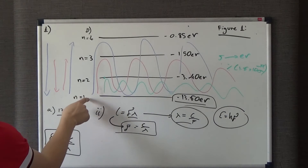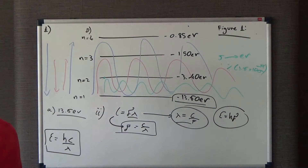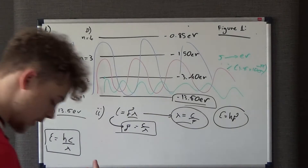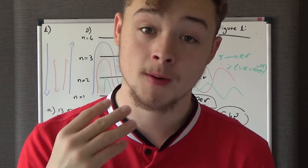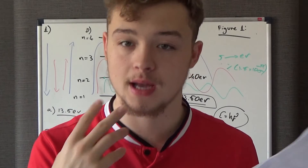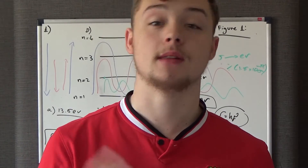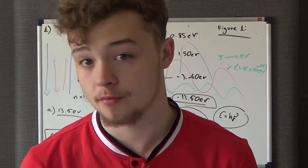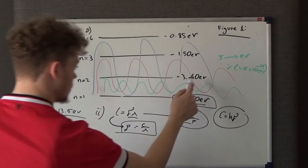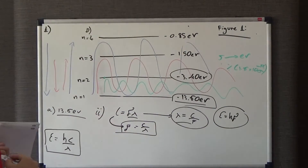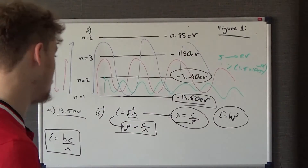The smallest energy change is from n=1 to n=2, since that's the smallest gap between any two adjacent energy levels. The energy the electron absorbs during excitation is exactly the energy released in the photon when it de-excites. So the energy of the emitted photon equals the difference between the energy at n=1 and the energy at n=2.